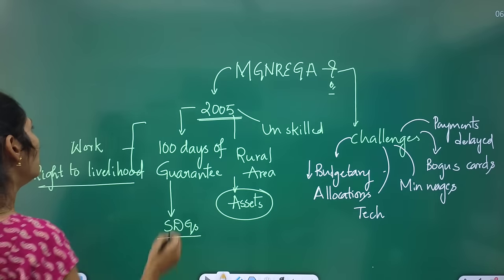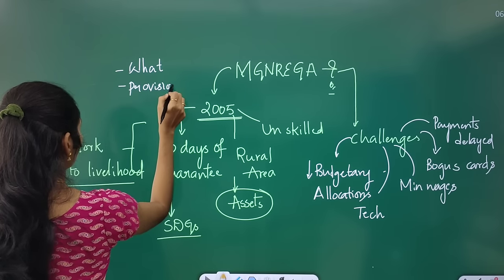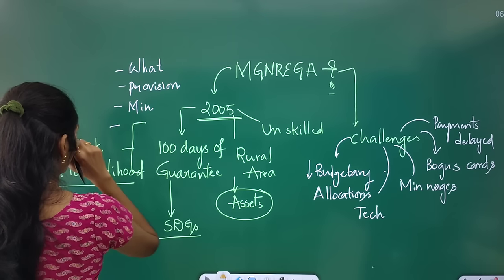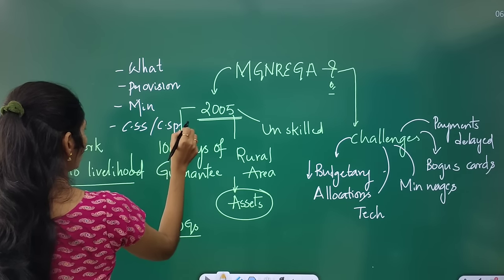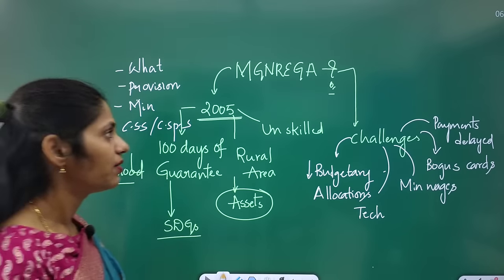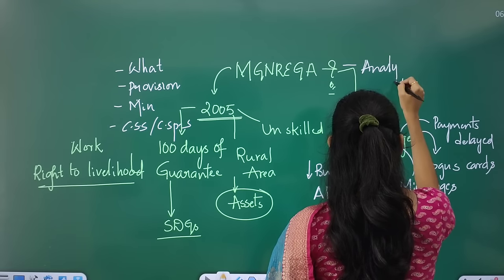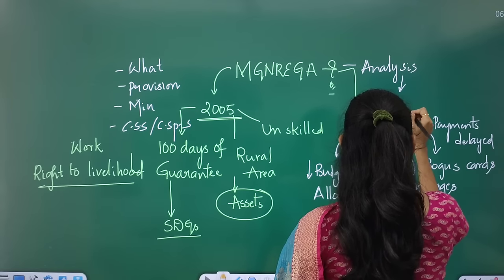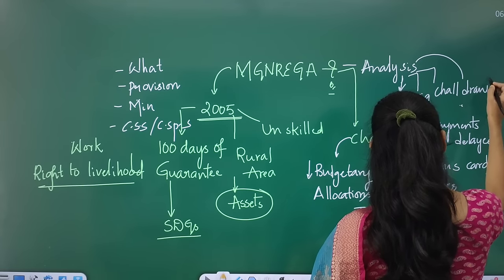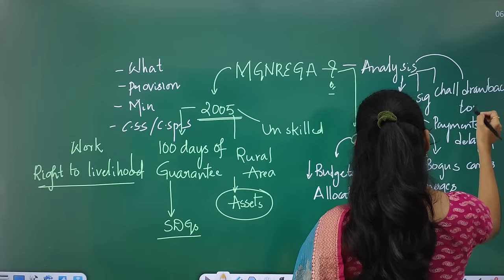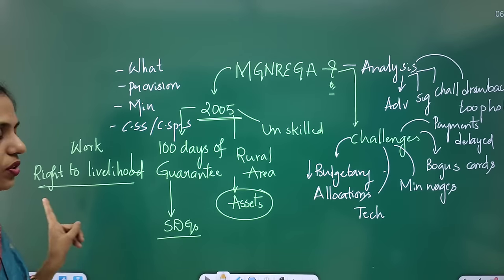Whenever any scheme appears in the news, you have to see several dimensions: what is the scheme, what are its provisions, under which ministry it falls, whether it is a Central Sector Scheme or Centrally Sponsored Scheme. From a Mains point of view, you need analysis-based understanding — what are the advantages and significance, what are the challenges, drawbacks, or loopholes. This is how you have to read articles.